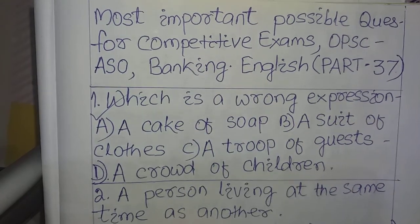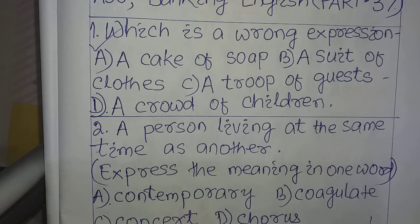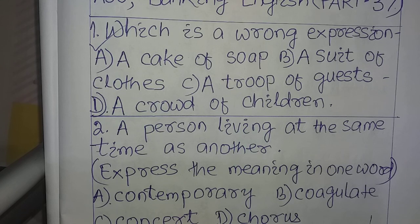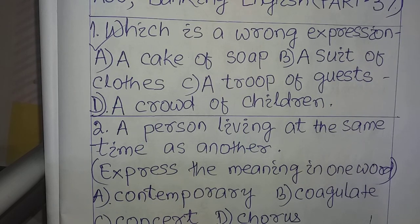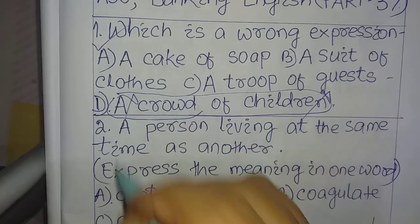Question number one: which is a wrong expression? A) a cake of soap, B) a suit of clothes, C) a troop of guests, D) a crowd of children. Only one expression is an error and three are correct. You have to identify the wrong expression. The answer to question number one is 'a crowd of children' — it is a wrong expression.